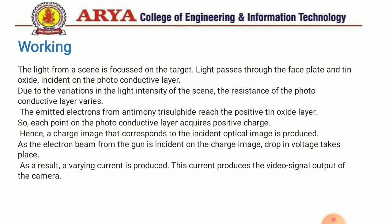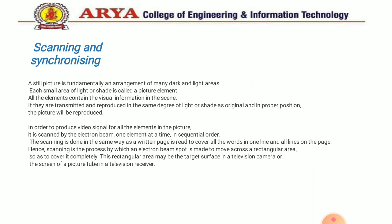For scanning and synchronization: a still picture is fundamentally an arrangement of many dark and light areas. A small area of light or shade is called a picture element. All elements contain the visual information in the scene. If they are transmitted and reproduced in the same degree of light or shade as the original and in the proper position, the picture will be produced. To produce a video signal for all the elements in the picture, it is scanned by the electron beam one element at a time in sequential order.